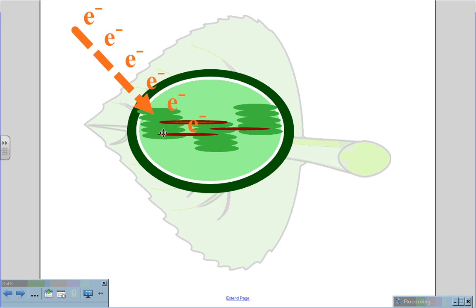Inside the chloroplasts are two main suborganelles called the grana, which are stacks of these green tissues, and then there are bridges between the grana called stroma.